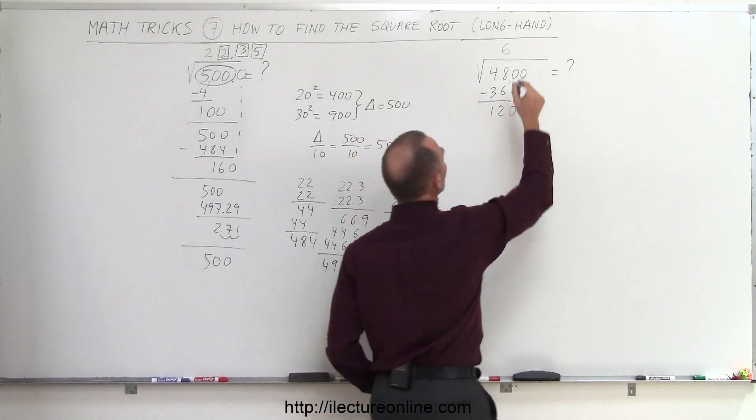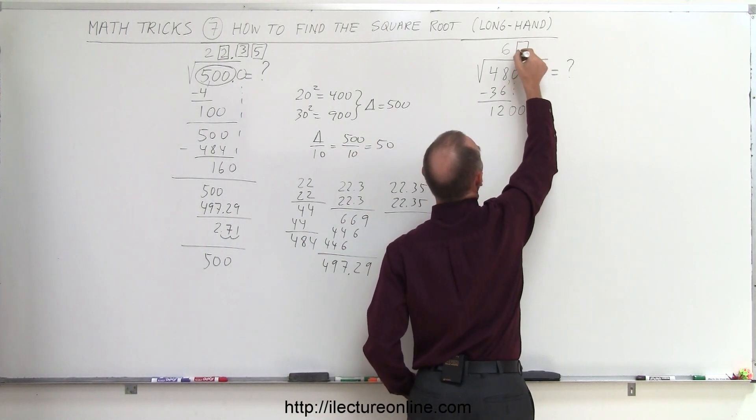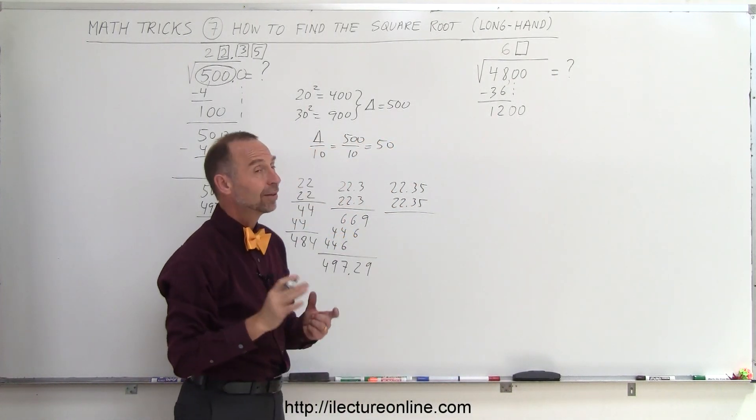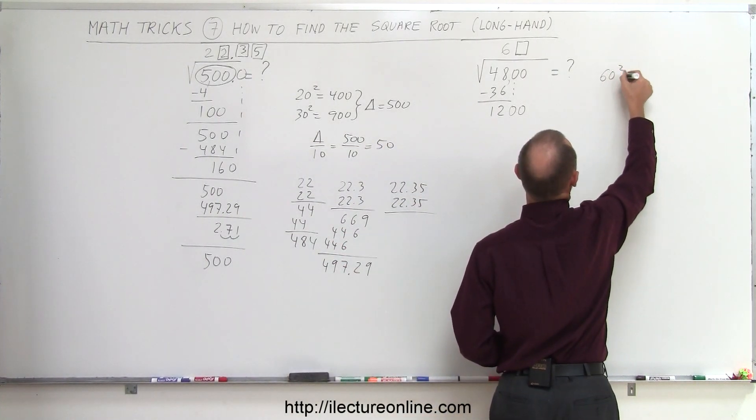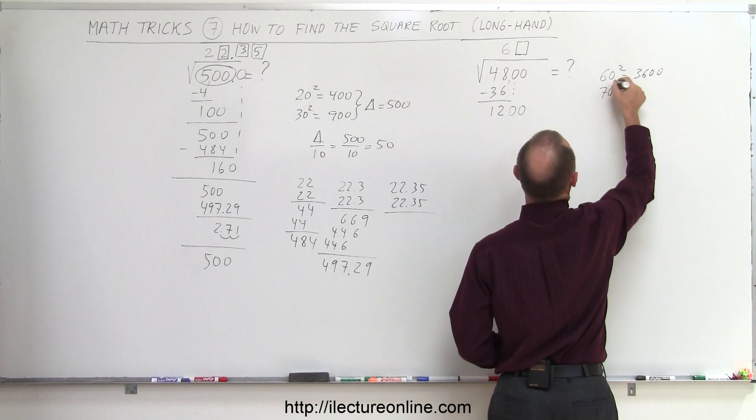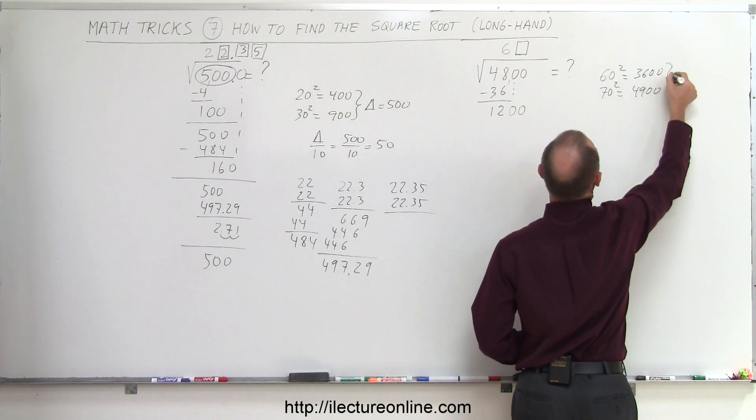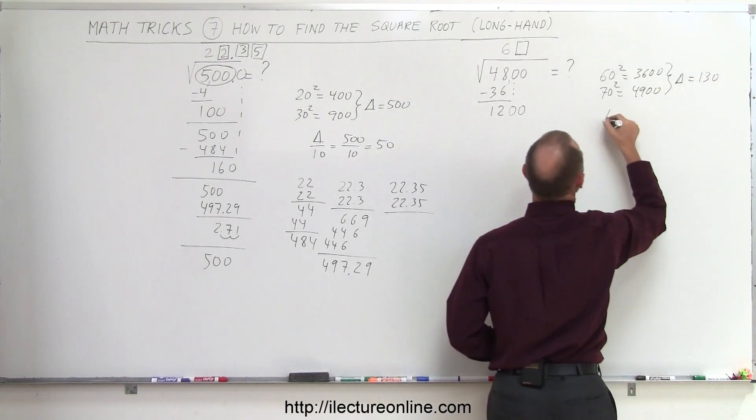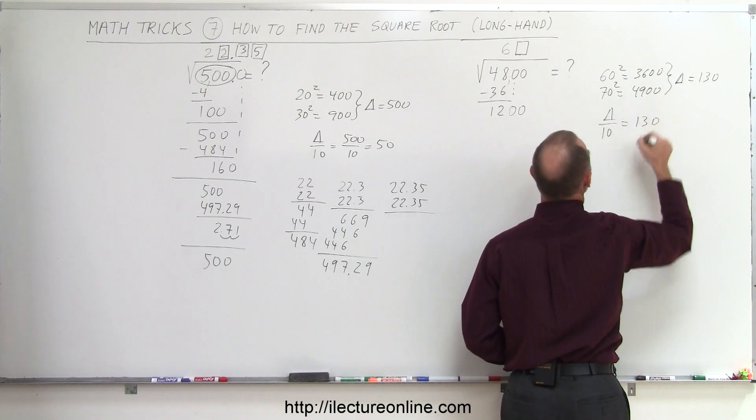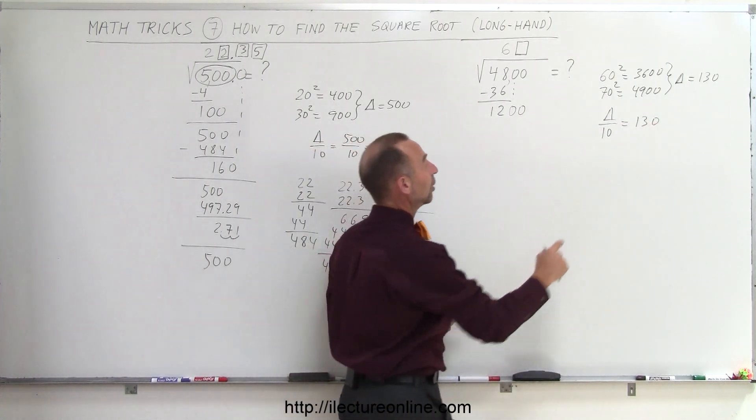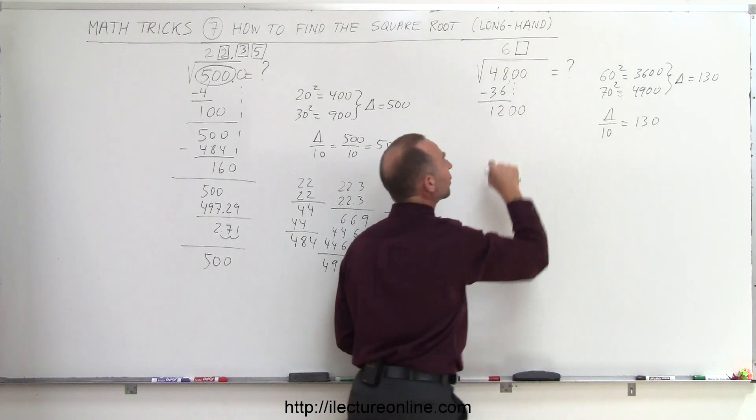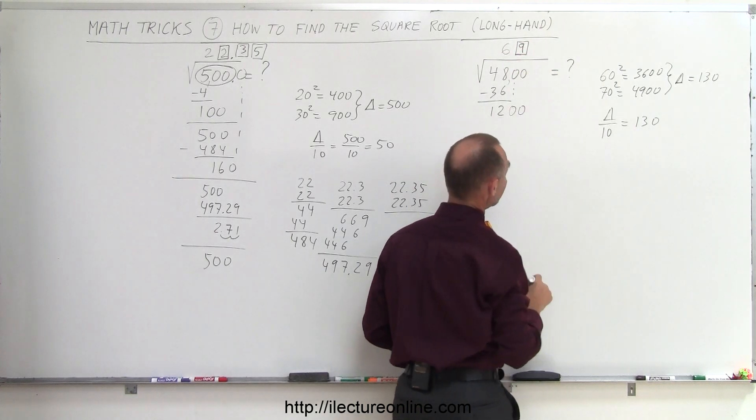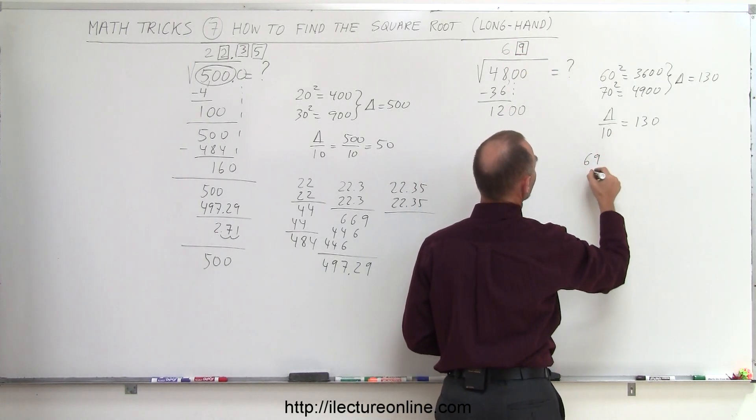So I know that my answer is going to be somewhere between 60 and 70. I'm looking for the second digit there. And what I need to do now is say, well, 60 squared is equal to 3600, and 70 squared is equal to 4900. That means the delta between these two is equal to 1300, and the delta divided by 10 is equal to 130. So now I ask myself the question, 130 goes into 1200 how many times? And it looks like 9 would be the answer, so I know my next number here is 9.